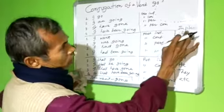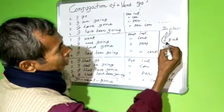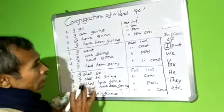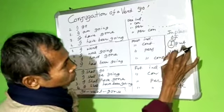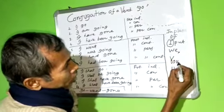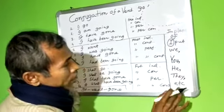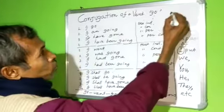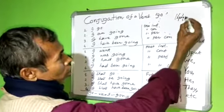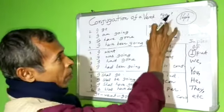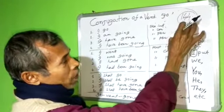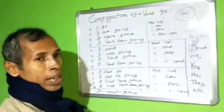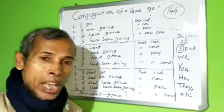These 12 sentences used 'I' as the subject. In place of 'I', put you, he, she, they, etc. Therefore, with the verb go we have 144 sentences. Make them interrogative, make them negative. In my channel I have been encouraging students to learn verbs.